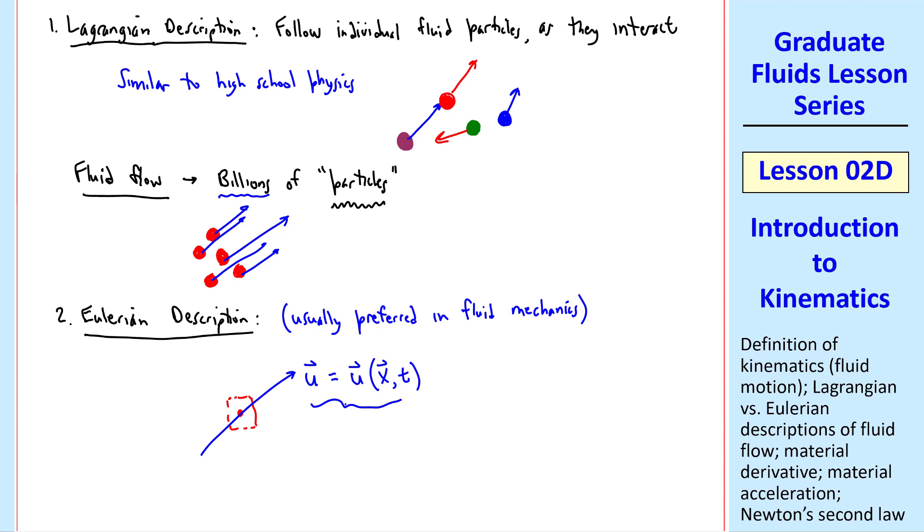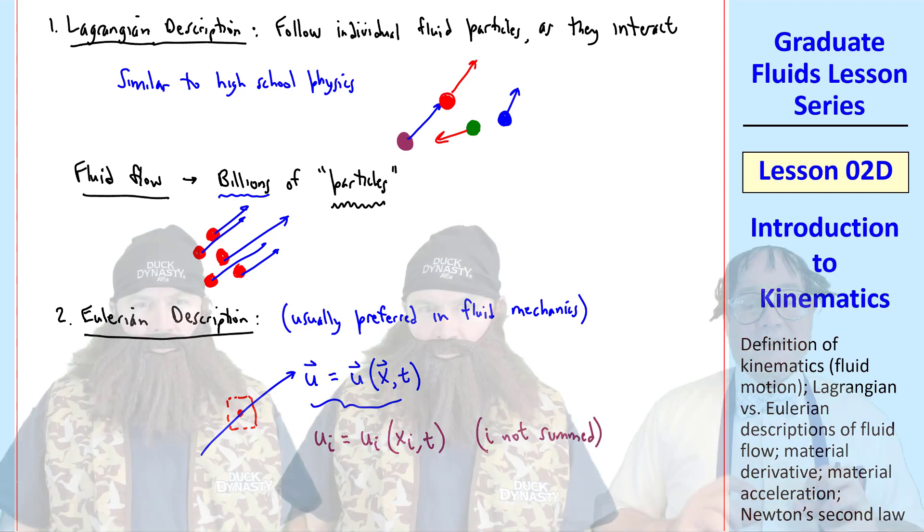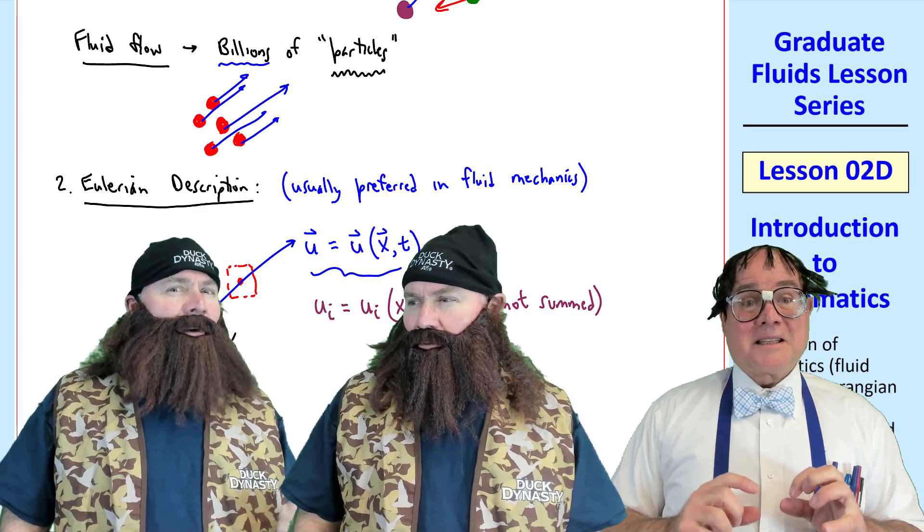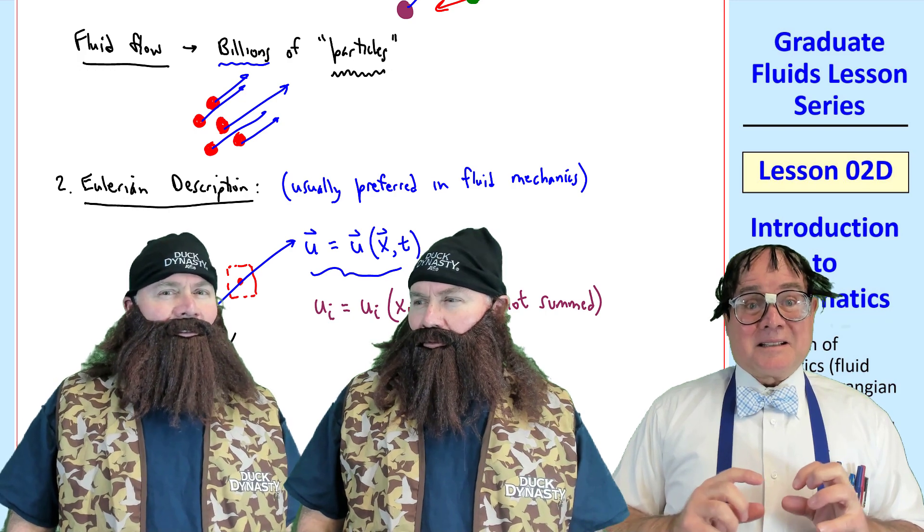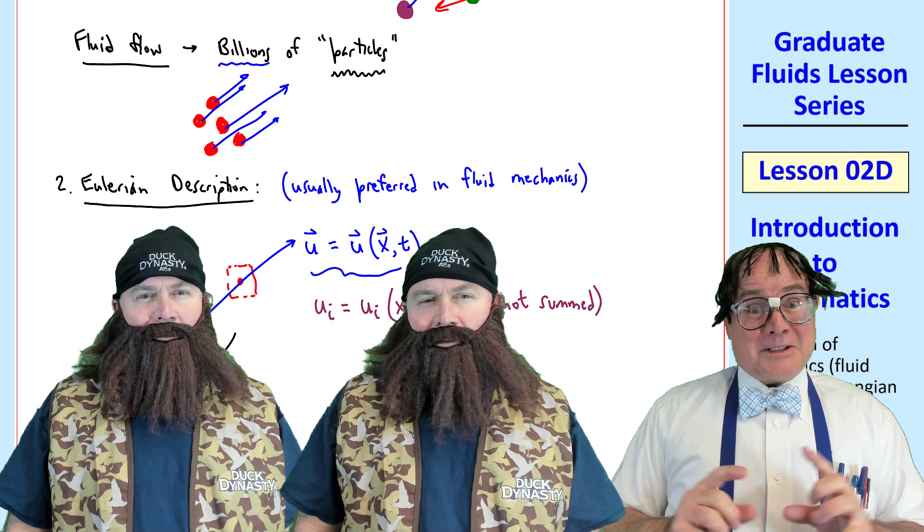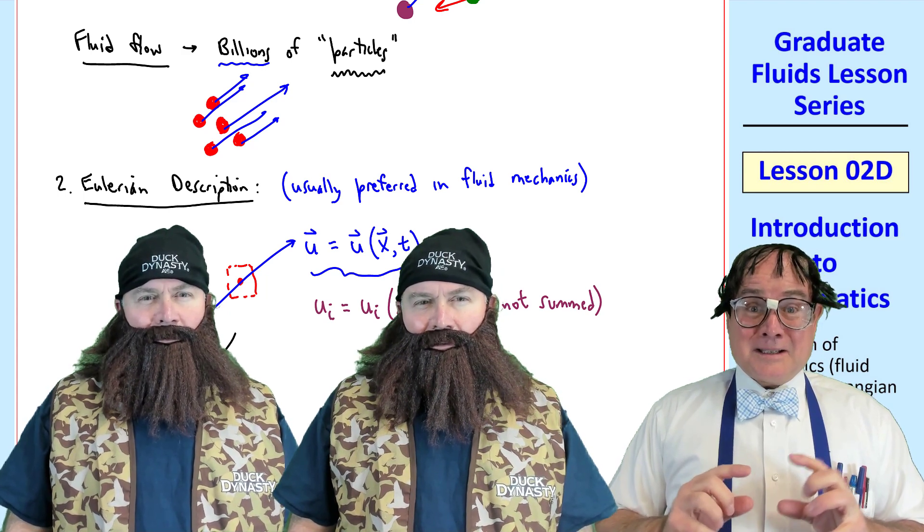We're going to use tensor notation. So we write this as ui with free index i as ui of xi and t. But to avoid confusion, since we have two i's in this right-hand side, we write i not summed. Duck has two i's, but he's always confused. Don't you ever stop. Well, you two shouldn't argue so much. You're brothers. You tell them, Ned.